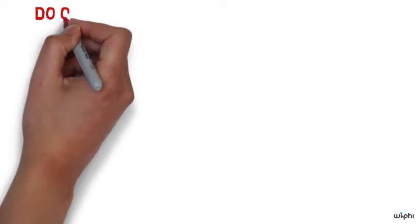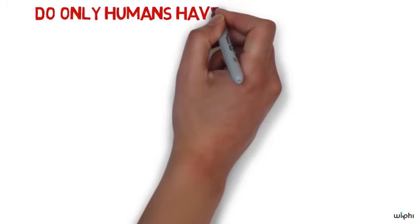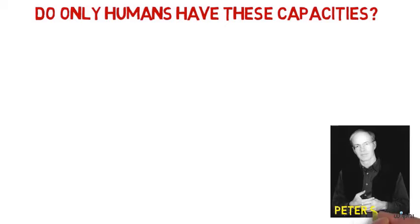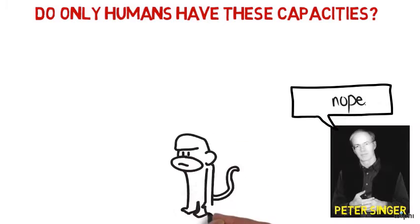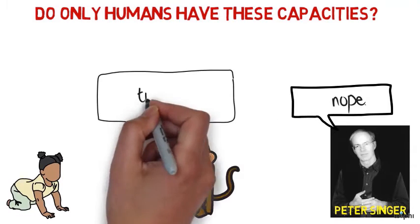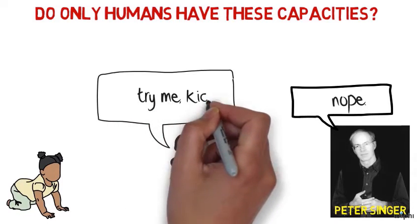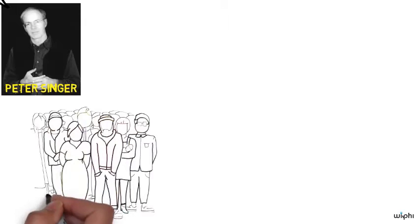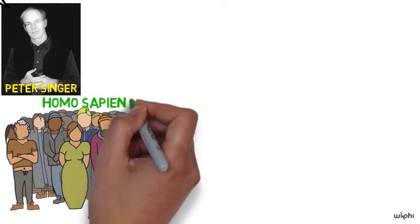But recently, many people have started to question the idea that all and only human beings have these capacities. For example, Peter Singer argues that no matter which capacity we pick, we can always find some non-human animal, like say a chimpanzee, who has that capacity more than some human being, like say an infant or a severely disabled human being. In fact, it turns out that the only property that all and only humans seem to have is membership in the species homo sapien.